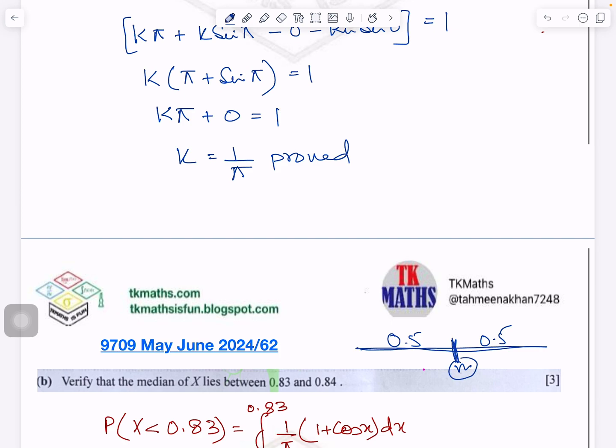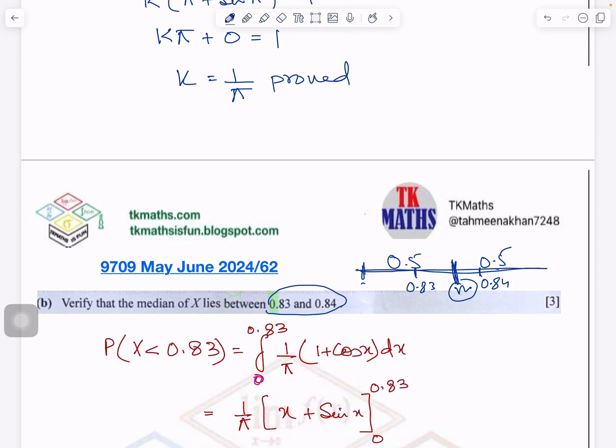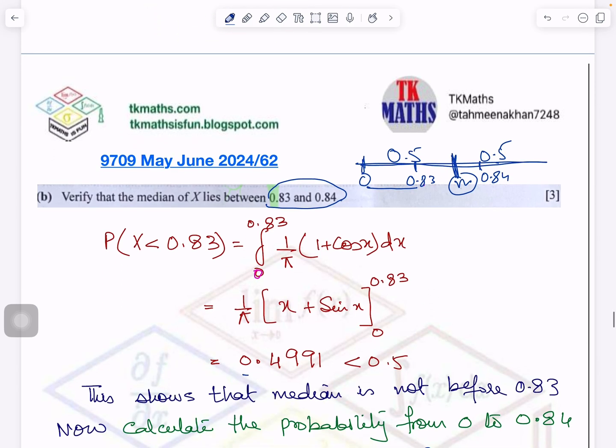So this median value, question is saying is lying between this. Suppose 0.83 is here and somewhere, anywhere, but this side 0.84 is here. Not equally, but anywhere here. So, what I will do here, I will find out from 0 to 0.83, the area by integrating. Probability I am calculating. So when I will calculate 0 to 0.83 probability, I found it is 0.4991. Because it is less than 50%, it means the median is after this. I hope you understand this concept.